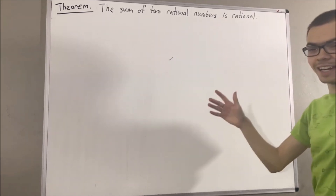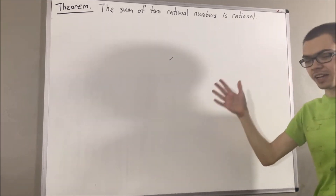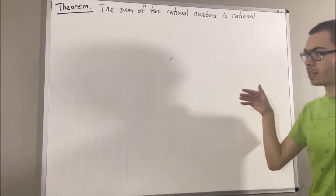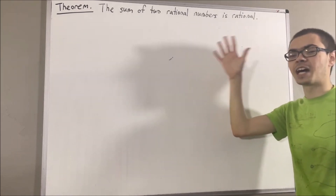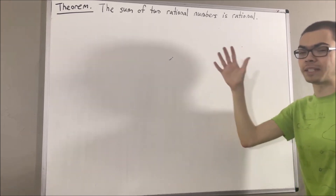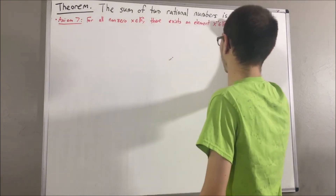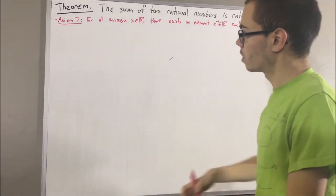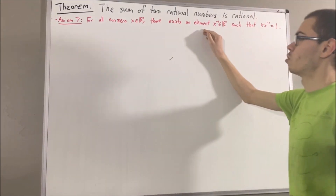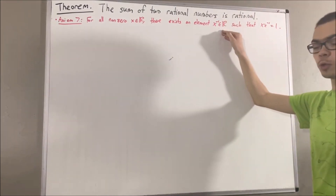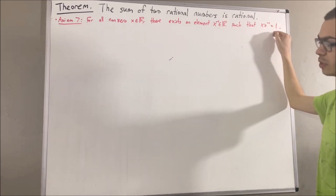In this series, we are using a list of 10 axioms for the real number system, and I'll leave that list of axioms in the description below. Axiom 7 tells us that every non-zero real number has a reciprocal. So, for all non-zero real numbers x, there exists a real number — which we call the reciprocal of x — that has the property that x times the reciprocal of x is equal to 1.